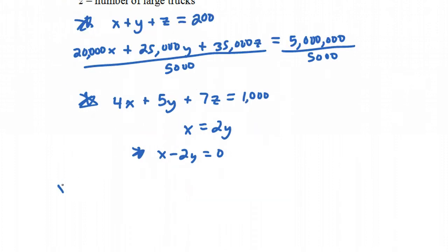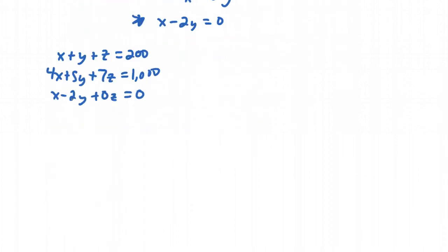What we have now is a system of equations. Let's write out those equations here. x plus y plus z equals 200, 4x plus 5y plus 7z equals 1,000, and x minus 2y plus 0z is equal to 0. So we have a system of three equations and three variables. Now, let's write the augmented matrix for this system. The coefficients in the first equation are 1, 1, 1, and on the right side of the equal sign, we get 200. Then we have 4, 5, 7, 1,000. Then we have 1 minus 2, 0, 0.